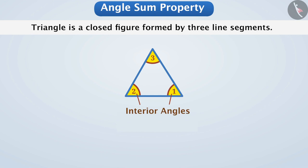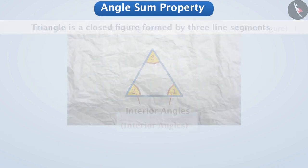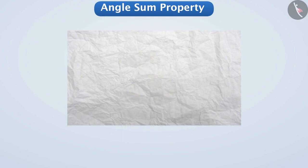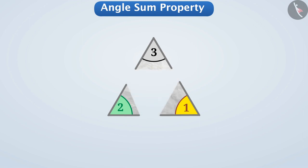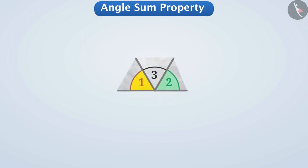There is an interesting relation between the three angles of a triangle. Let us understand it through an activity. Draw a triangle on the paper and cut it. Name the angles of the triangle as angle 1, angle 2, and angle 3. Now cut all three angles and separate them. Arrange them in a way as shown in the figure.